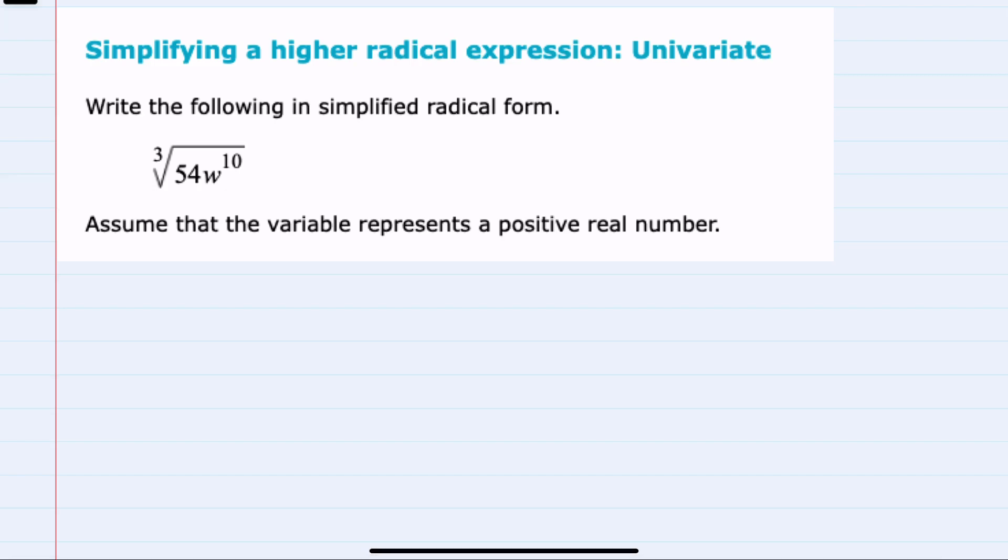In this video, I'll be helping you with the Alex problem type called Simplifying a Higher Radical Expression, Univariate. We're given this expression, the cubed root of 54w to the 10th power, and we're asked to simplify.